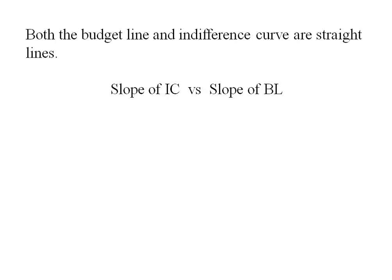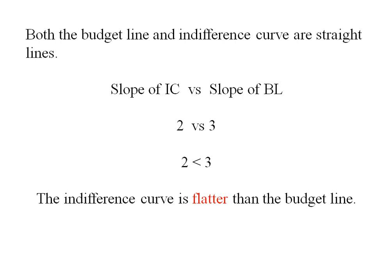Let's compare the slope of the indifference curve with the slope of the budget line. If the indifference curve is steeper, we'll have an x-axis corner solution; if the indifference curve is flatter, we'll have a y-axis corner solution. We've got two versus three (in negative), and since two is less than three, the indifference curve is flatter than the budget line. This tells us we're going to have a y-axis corner solution.